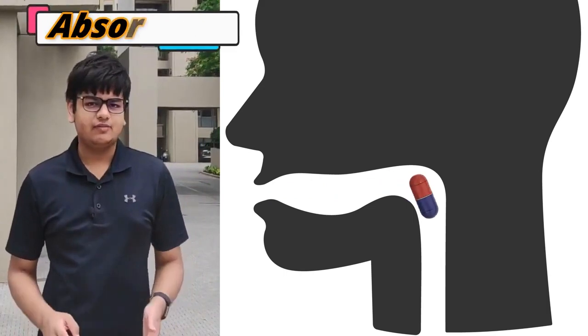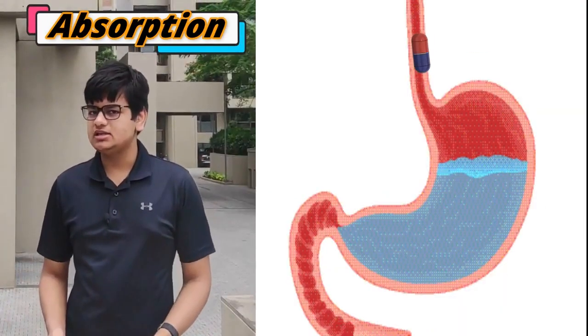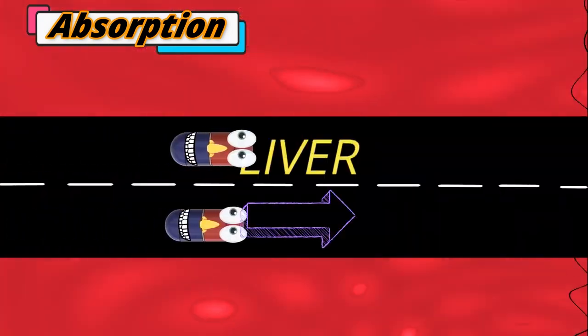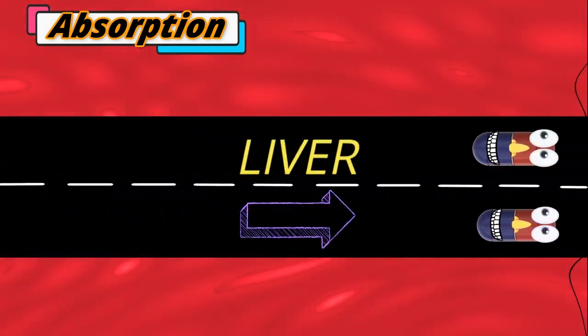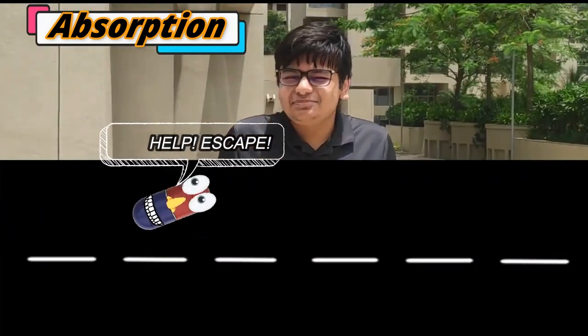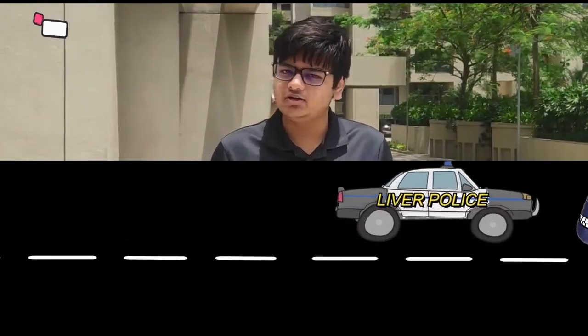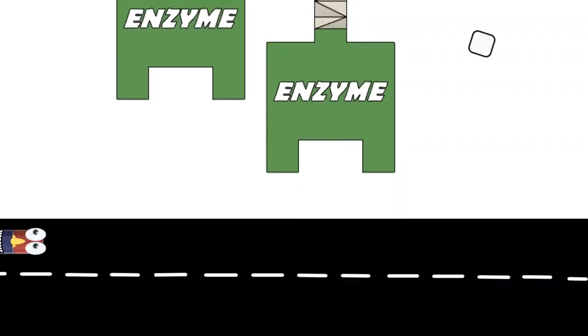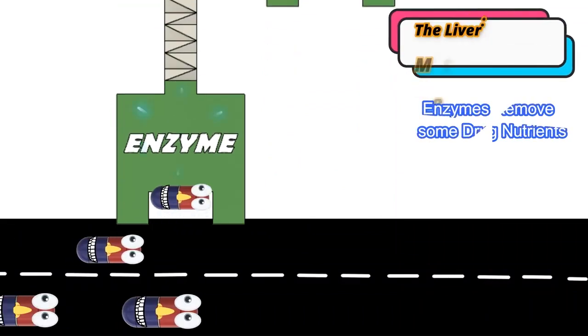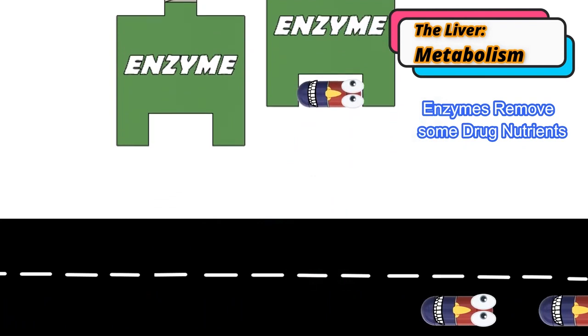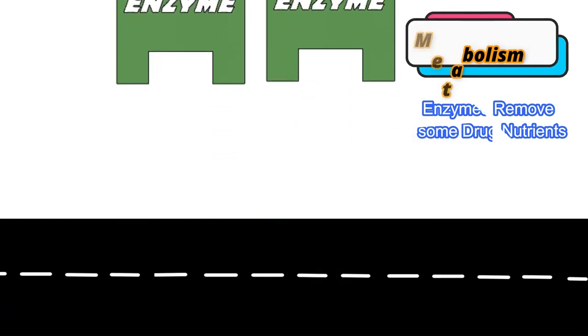It begins with absorption, where the drug is swallowed, allowing it to travel down the esophagus, get dissolved in the stomach, and finally be absorbed by the small intestine. These nutrients then travel to the liver. The liver is basically a police officer and tries to stop unknown particles from entering the bloodstream. As the nutrients from the medicine enter the liver, it tries to deactivate or metabolize them to prevent them from entering the bloodstream. However, it cannot metabolize all of them, and most nutrients escape.